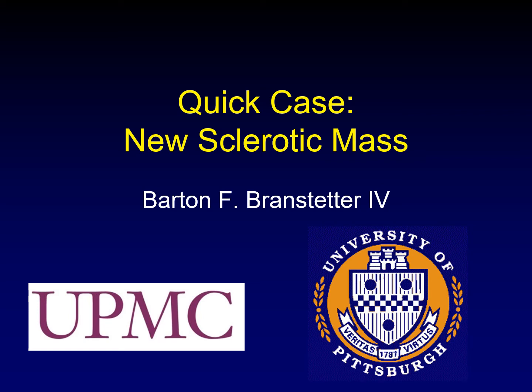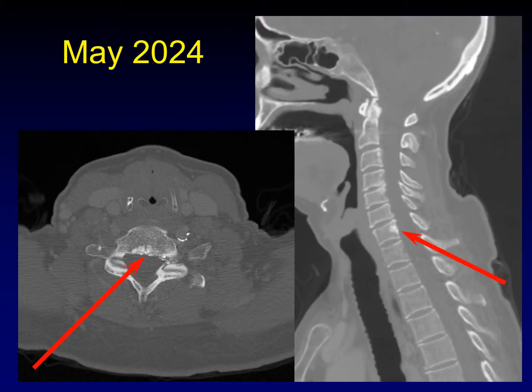What do you do when you're reading a head CT and you find a new sclerotic mass in the cervical spine? It is being imaged for B-cell lymphoma, and an astute fellow sitting next to me pointed out that there was a new sclerotic mass in the cervical spine that wasn't there previously. Lymphoma doesn't generally produce sclerotic masses, so this was a confusing development.